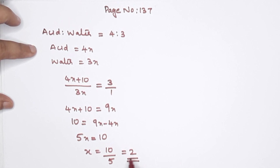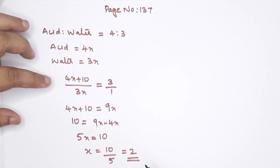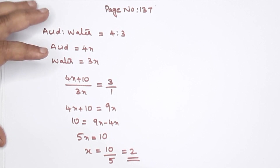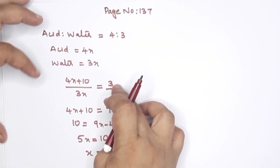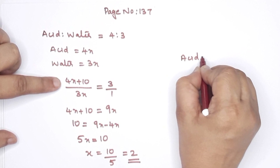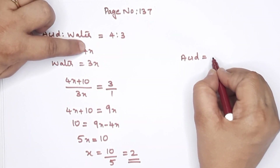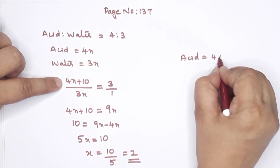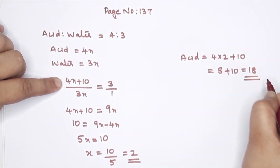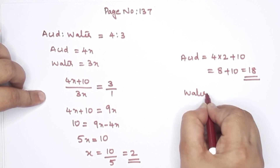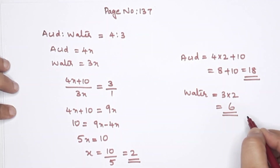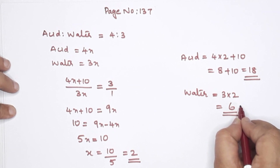So x is equal to 2. Now the question asks: how many liters of acid and water does the liquid contain now, in the present condition with ratio 3 is to 1? Acid is 4 into 2, which is 8, plus the 10 liters added, giving 8 plus 10 equals 18 liters of acid. Water is 3x, which is 3 into 2, equals 6 liters of water.